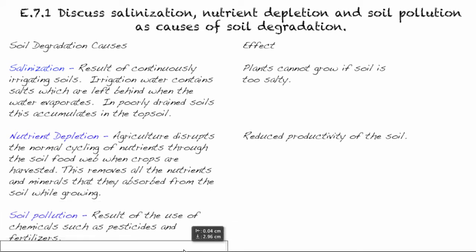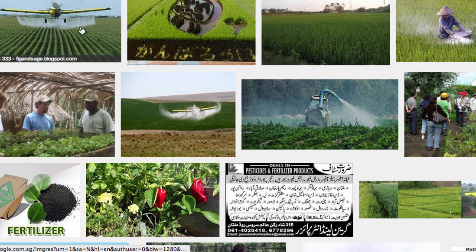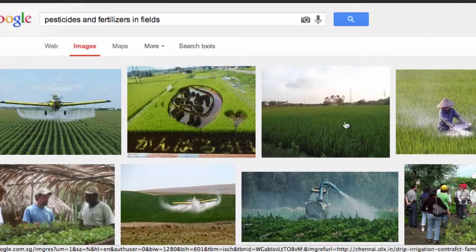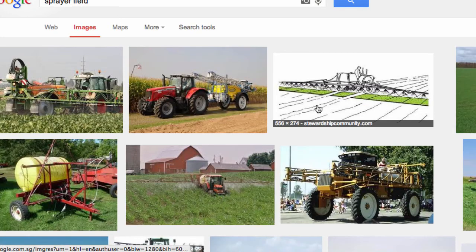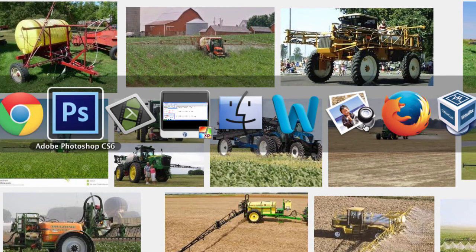That leads to the third cause: soil pollution. That is the result of the use of chemicals such as pesticides. Pesticides are used to kill anything that might be affecting the yield of your crop by eating it or somehow breaking it down. And also fertilizers. If we take a look at what that looks like, we can see here — this is basically how a lot of things are sprayed. Although more commonly in most Western nations, it would look like this. So that's what happens on the farm in Canada — you just spray, as you can see in this photo.